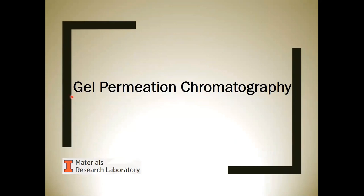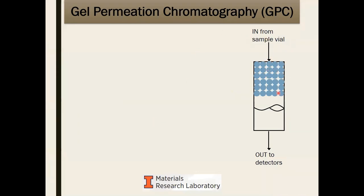The first instrument and technique I'll cover is gel permeation chromatography, or GPC. Interestingly, the most complicated word out of those three is actually 'gel.' Chromatography simply means separating a mixture of things dissolved or dispersed in a liquid. Permeation — we know what it means to have something permeate through another thing. The GPC column consists of a lot of small beads, on the order of about 10 microns in diameter, packed in a metal casing with liquid constantly flowing through.